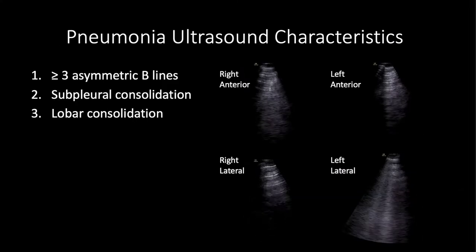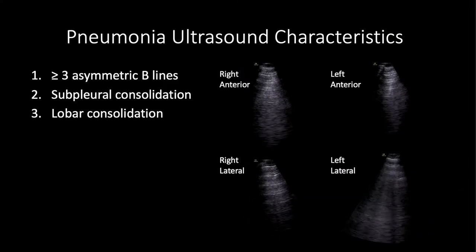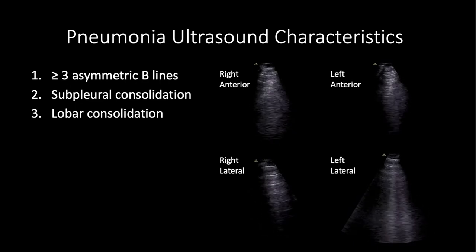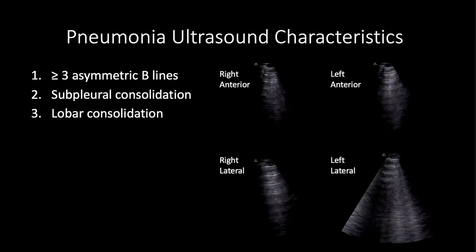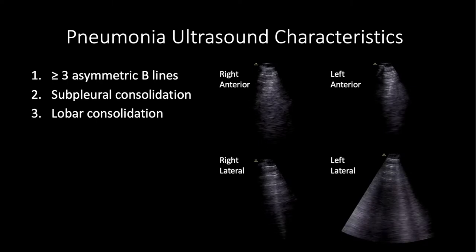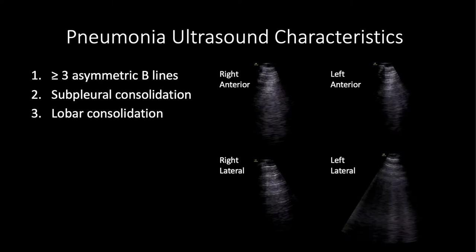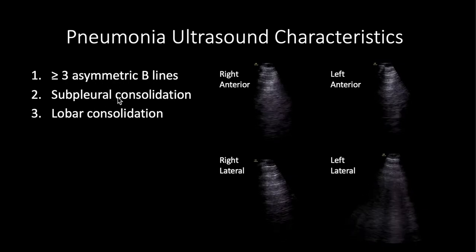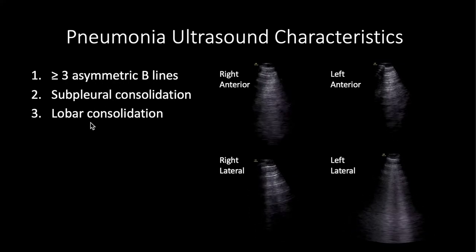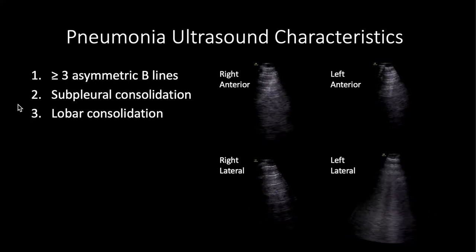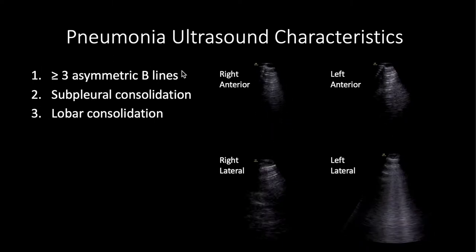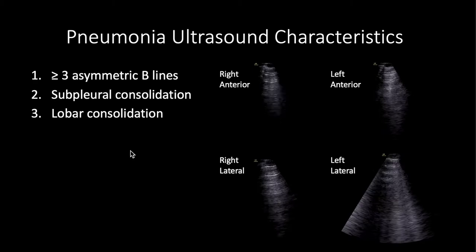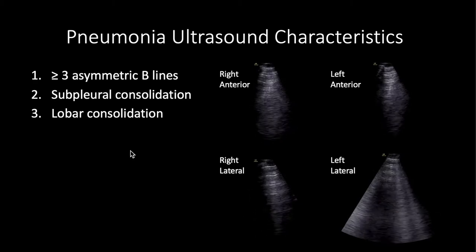How do we distinguish pneumonia with ultrasound? What are the clues that what we're seeing may be pneumonia, outside of usual clinical indicators like fever, cough, and sputum production? Those three clues are asymmetry, subpleural consolidations, or lobar consolidations. If you see any one of these characteristics along with B-lines, that increases the likelihood that you're looking at a pneumonia.